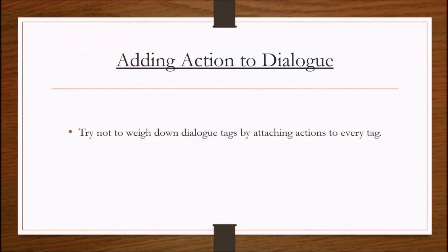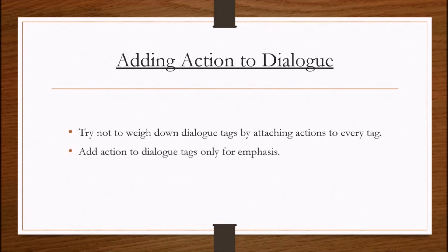Adding action to dialogue: 'He said, putting the cup down.' Try not to weigh down dialogue tags by attaching actions to every tag using a verb ending in -ing. 'These wings are good,' Leaf said, dipping the hot wing in the sauce. He dunked it again. 'Are you a pig or a man?' Olaf asked, reaching for his axe. Overuse of these types of tags can quickly tire the reader out. It also drags the sentence out. Add action to dialogue tags only for emphasis, if you want to draw your reader's attention to a specific gesture or event which takes place during dialogue.